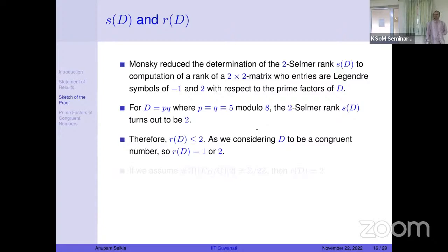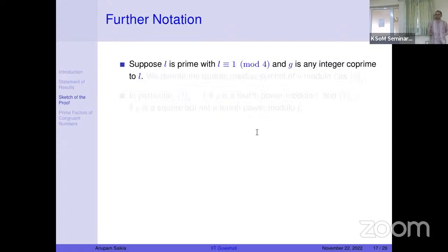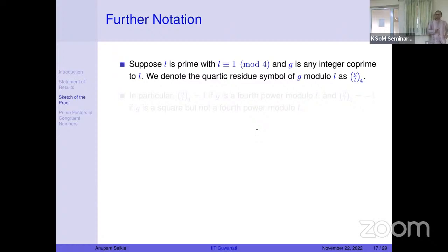Since the 2-torsion part of the Shafarevich-Tate group is not Z/2Z, we can conclude r_d = 2. Now I need to introduce the quartic residue symbol: for a prime p ≡ 1 mod 4, the ring Z[i] has units of order 4, and we can define when an element is a fourth power mod p — the quartic residue symbol equals 1 in that case. This definition is needed for Brown's criterion and Kaplan's criterion on class groups.